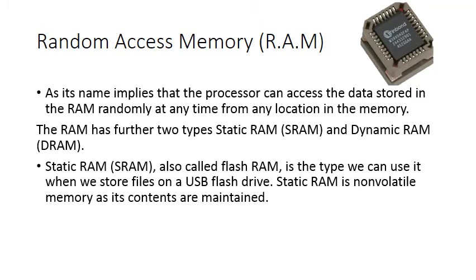Memory in RAM is volatile, which means every time you turn off your computer, it stops saving information. Static RAM, also called flash RAM, is the type we use when we store files on USB flash drives. Static RAM is non-volatile memory; its contents are retained. This means you can remove the flash drive and plug it back in, and you still have the same information from before.